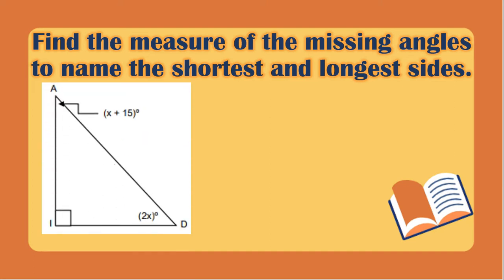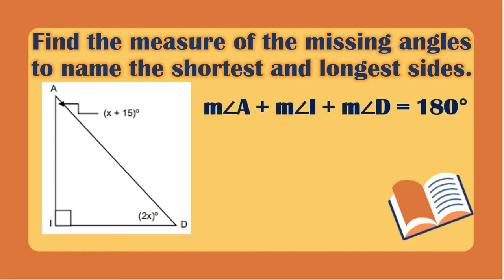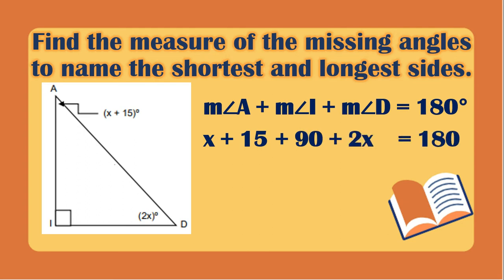In this figure, first we need to find the value of X. To get the value of X, we need to add all the angles. So we have the measurement of angle A plus the measurement of angle I plus the measurement of angle D equals 180 degrees, which is the total measurement of the interior angles of a triangle. The measurement of angle A is X plus 15, angle I is a right angle so it is 90, and angle D is 2X.